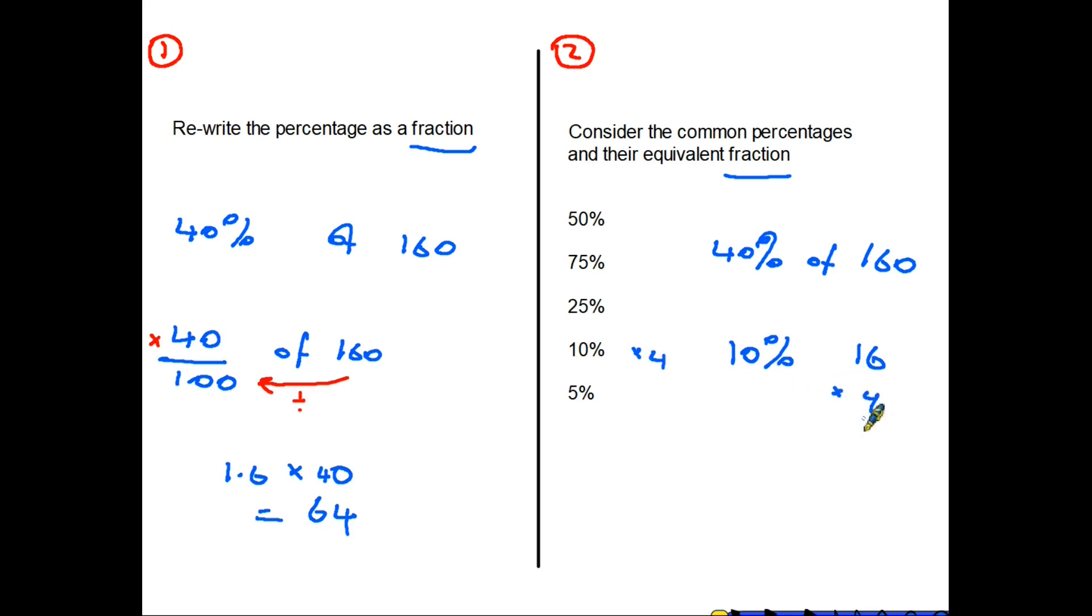Therefore we need four of those, so times by four, and we will get four of those. So you can add up all the different bits to find the percentage you need, or you can do a straightforward finding a fraction method on this side.